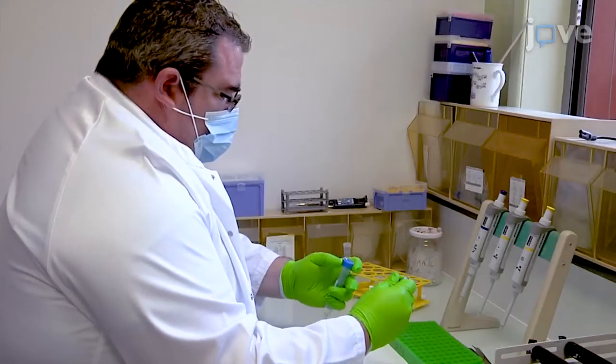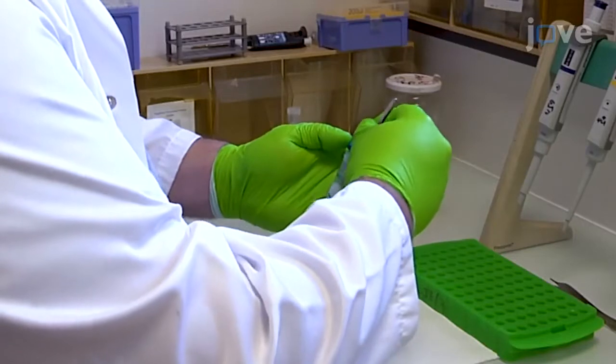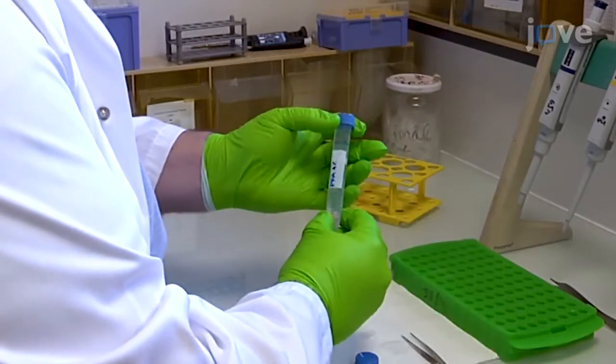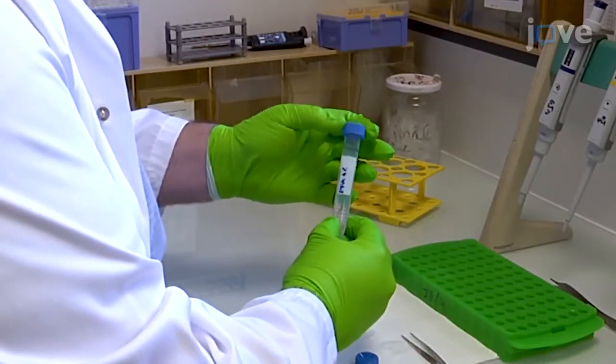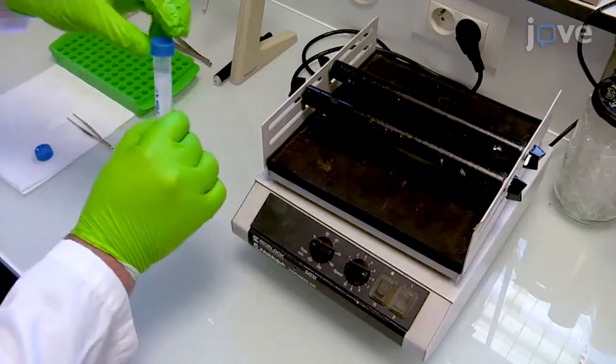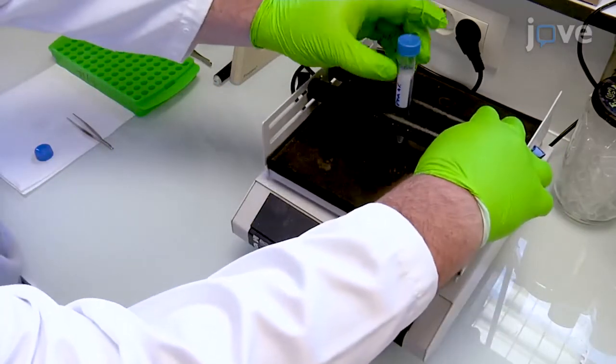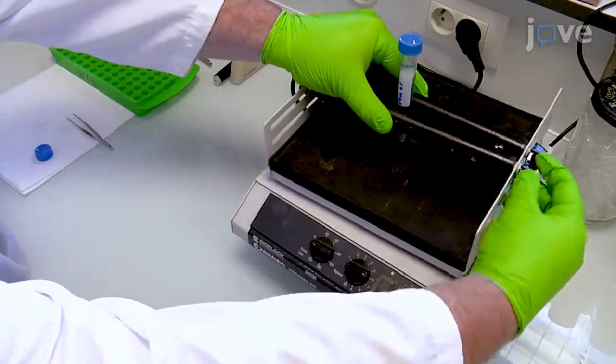Begin by immersing the harvested mouse or human white adipose tissue in at least 10 mL of 4% paraformaldehyde in PBS in a 15 mL plastic tube, preferentially under a chemical hood.